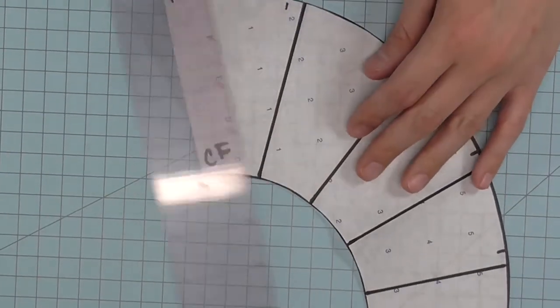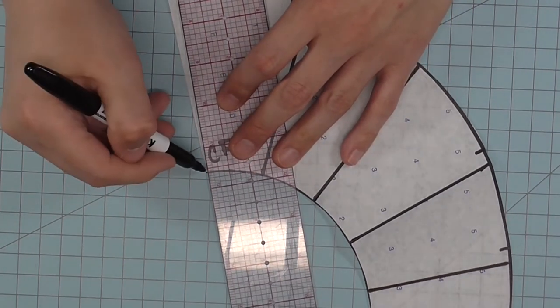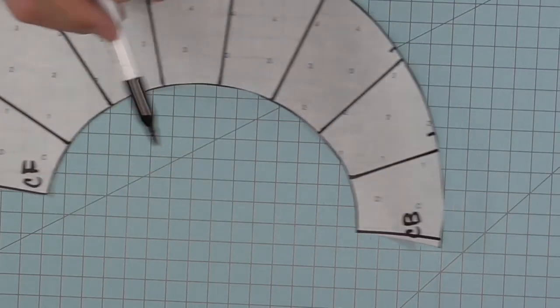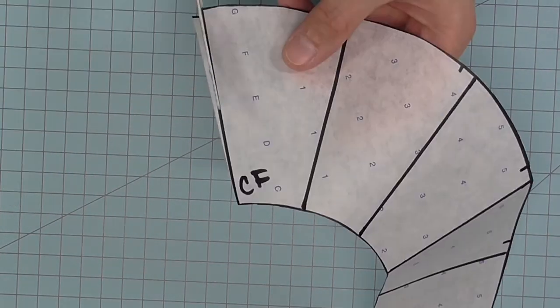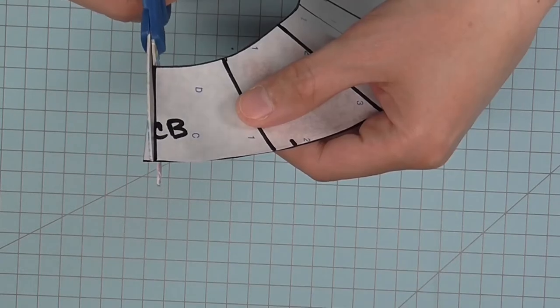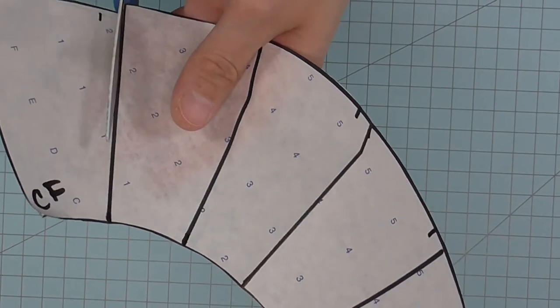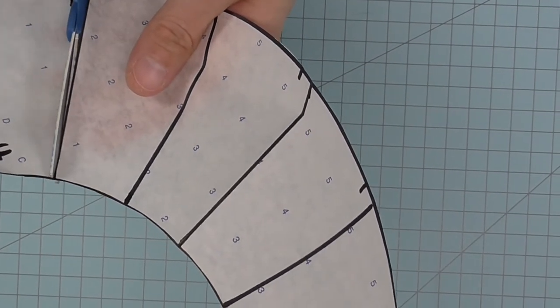Again, for the sake of the camera, I'm going to draw in my new center front and center back lines. Cut your new center front and center back lines. Cut the fold line to, not through, the head size line.